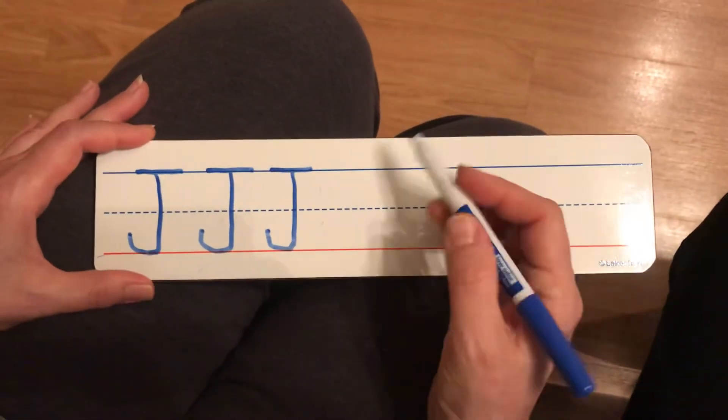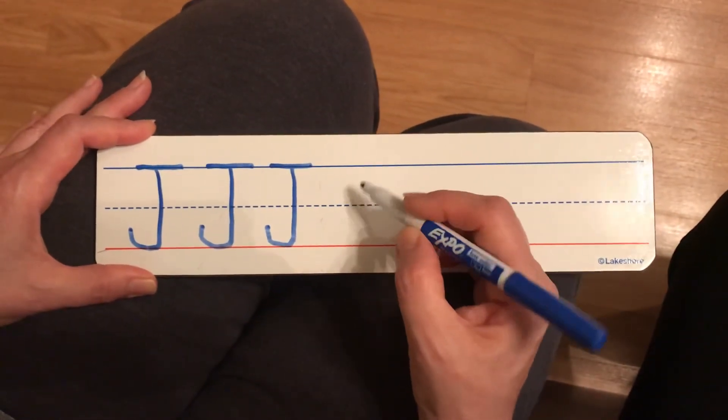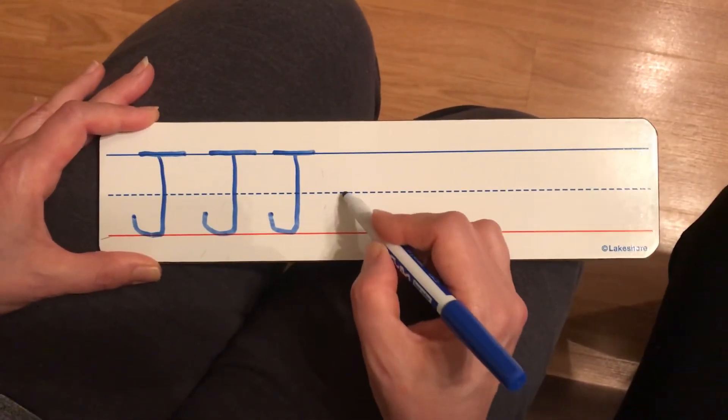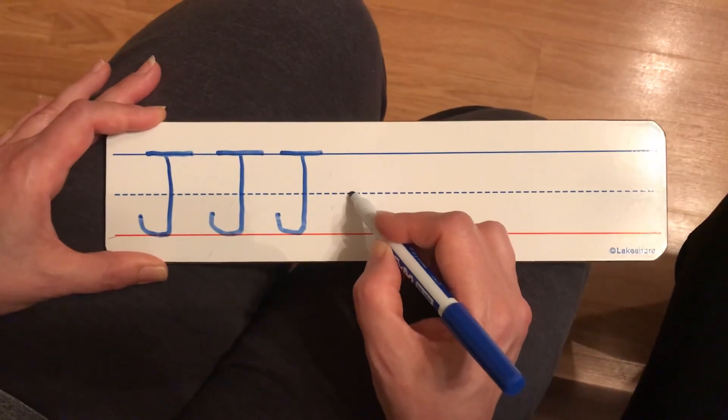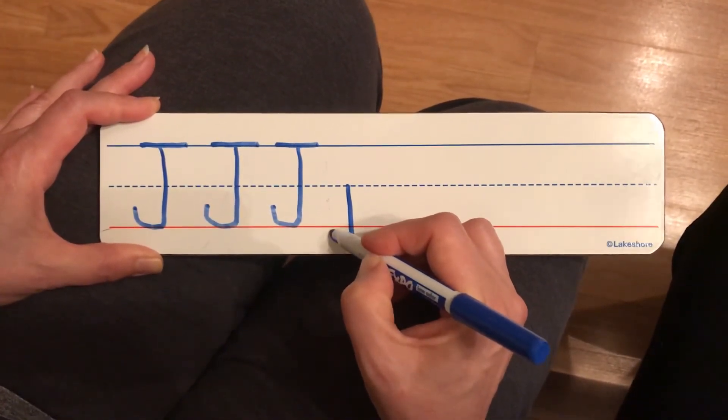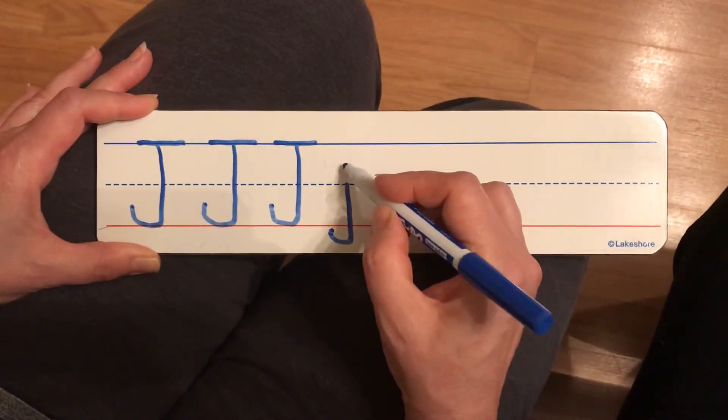Now for lowercase J, it's similar to that but just a little bit different but remember we're gonna start at the dotted line for that. So we're gonna start at the dotted line and do the same thing. Do a big line down and curve up and stop and a dot.